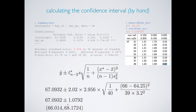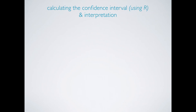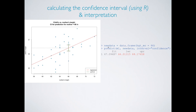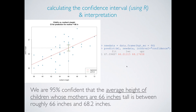This is somewhat tedious, and there is a shortcut: using R and the predict function. We first create a new data frame object where the mother's height is 66 inches. Then we feed this new data into the predict function along with our fitted model, and ask R to give us a confidence interval. R will give not only the confidence interval but also the predicted value. If we omit the interval argument, we would only get the fitted value. We are 95% confident that the average height of children whose mothers are 66 inches tall is between roughly 66 inches and 68.2 inches, with the fitted value of roughly 67 inches in the center of this interval.